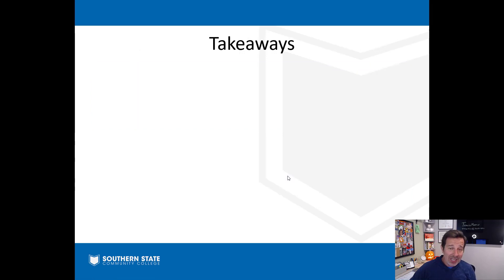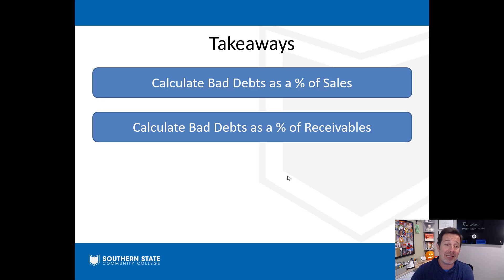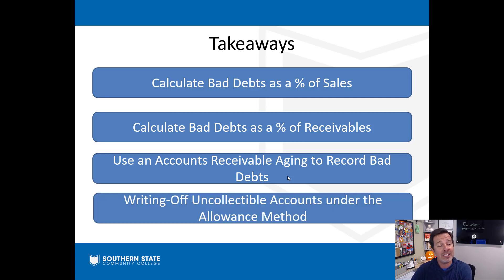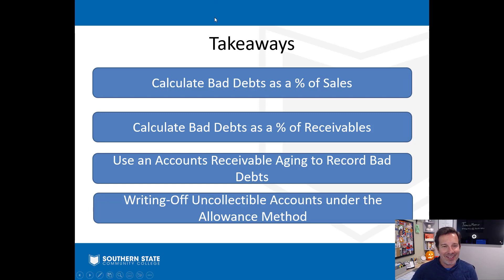Key takeaways: uncollectible accounts receivable must be reported at net realizable value. You need to know how to calculate bad debts as a percent of sales (income statement approach), as a percentage of receivables (balance sheet approach), and using an AR aging schedule. You also need to know how to write off uncollectible accounts using the allowance method. Reach out by email if you run into any issues with your problem set.